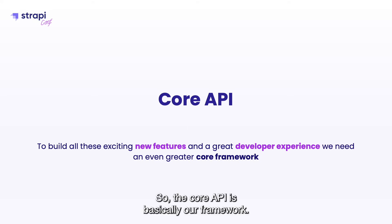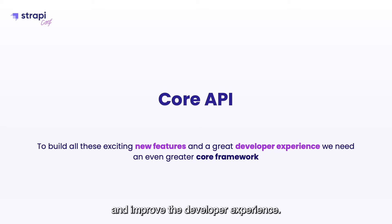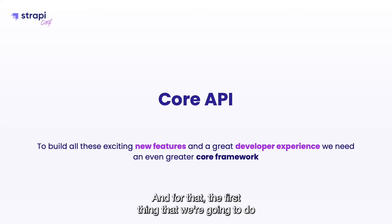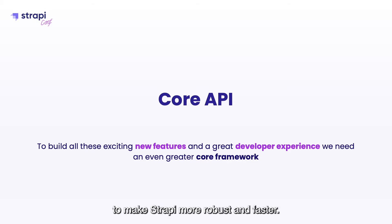The core API is basically our framework. We need to build a strong framework that will be stable and robust to be able to build the new features and improve the developer experience. The first thing we're going to do is work on a lot of the internal code at Strapi. We have internal APIs, internal loaders, and we want to improve them to make Strapi more robust and faster.